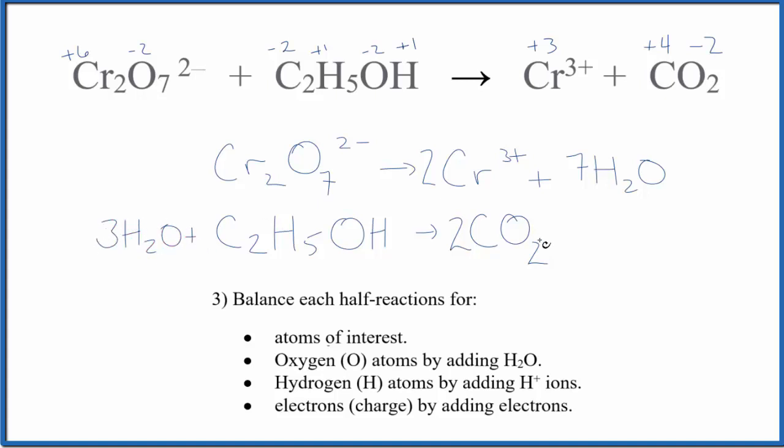Now I need to balance the hydrogens. We're going to add H+ ions to do that. Seven times two is 14, so let's add 14 H+ hydrogens are balanced. Here we have three times two is six plus five, that's 11, plus one that's 12. So let's add 12 hydrogen ions here.